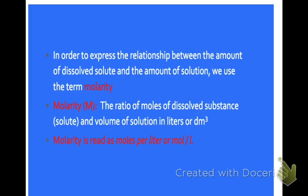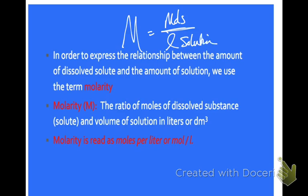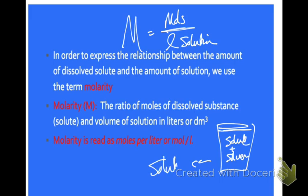In order to express the relationship between the amount of dissolved solute and the amount of solution, we're going to use the term molarity. Molarity is given the symbol capital M, and it means we're looking at the moles of solute over liters of solution — not liters of solvent, liters of solution. The solute plus the solvent gives us the solution, and we want to know the ratio of dissolved moles in that total amount of solution.